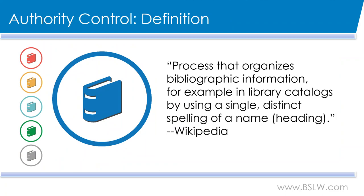In the broadest of definitions, authority control is a process that organizes bibliographic information by using a single distinct spelling of a heading. These distinct spellings are considered authorized, meaning that they are the accepted and official spelling of that heading. They are meant to be one of a kind, but unfortunately there are still a number of undifferentiated headings out there, and this means that they are not unique.